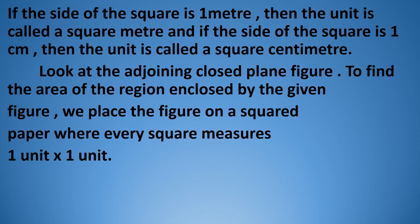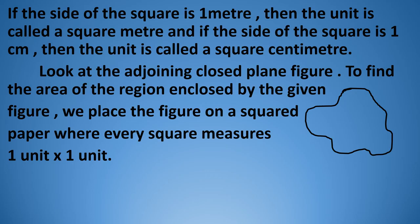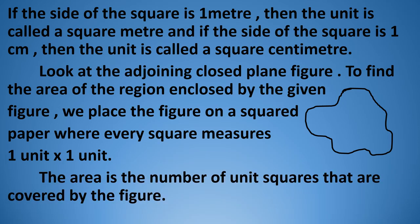Look at the adjoining closed plane figure. To find the area of the region enclosed by the given figure, we place this figure on a squared paper where every square measures one unit by one unit. We have to find out the area of this figure — we will draw this same figure exactly on a squared paper. Area is the number of unit squares that are covered by the figure.